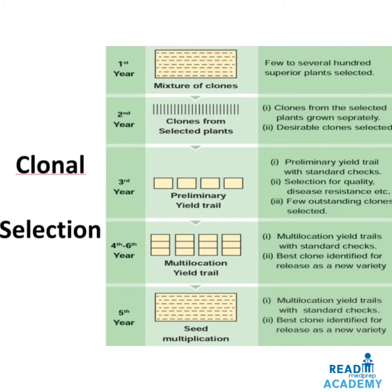In the clonal selection process: in the first year, a mixture of clones is evaluated and a few to several hundred superior plants are selected. In the second year, clones from selected plants are grown separately and desirable clones are selected. In the third year, preliminary yield trials with standard checks are performed, with selection for quality, disease resistance, etc., and a few outstanding clones are selected. From the fourth to sixth year, multi-location yield trials are conducted where plants are grown in different locations, traits are assessed and the best clone is identified for release as a new variety. Seed multiplication is also carried out.